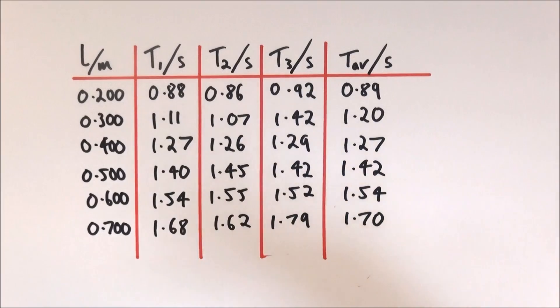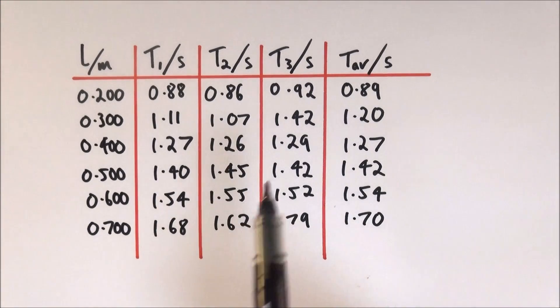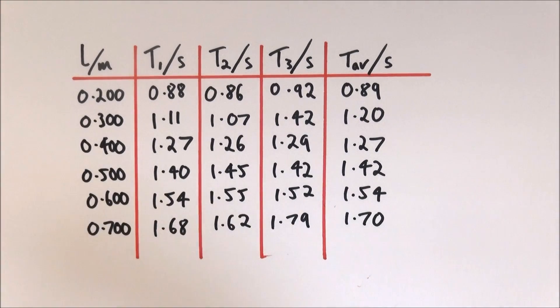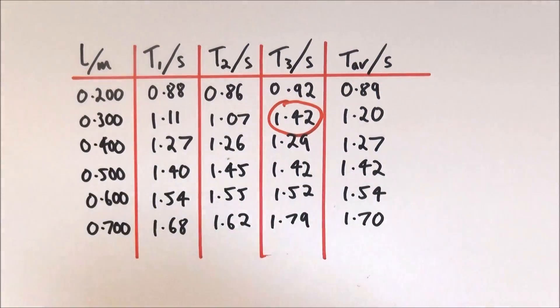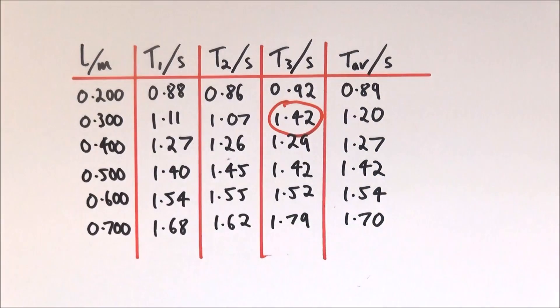Now something that sometimes tends to stick out when you have a table of data is that some of your results don't fit the pattern. It might be, for example, as you look at this one here, you'll see that there's maybe one outlier, this one here at maybe 1.42, and what that then does is maybe push up the average for that set of results.